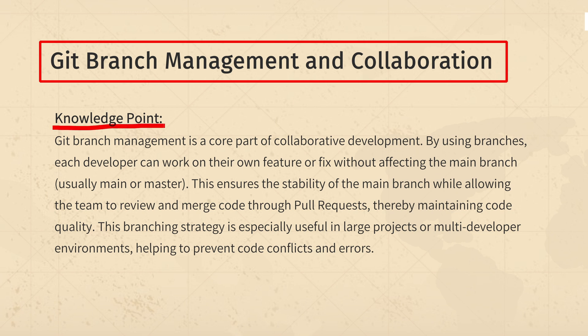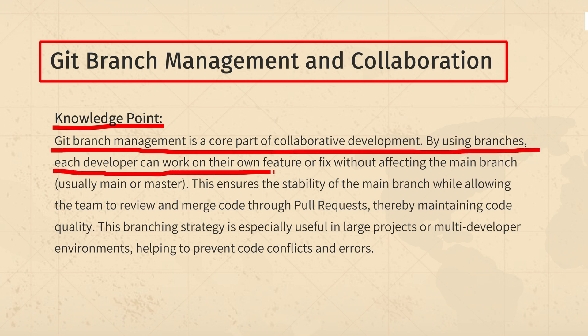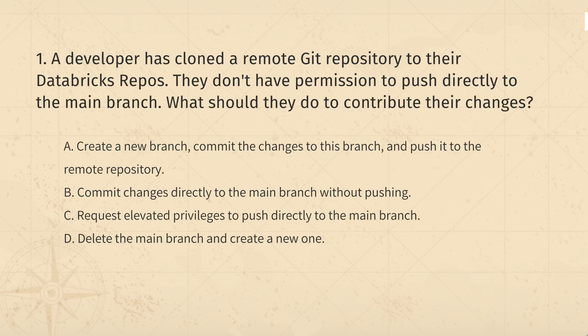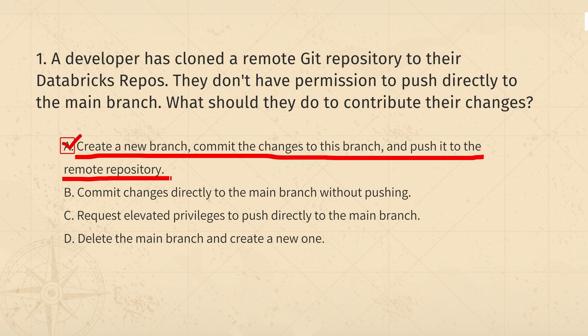The knowledge points of this question are: Git branches let developers work on their own changes without affecting the main branch. When you're done, you can ask for a code review and merge your changes safely. This is very important in team projects to keep things running smoothly. So, the correct answer is: if you can't push to the main branch, create your own branch, make changes, and push that.